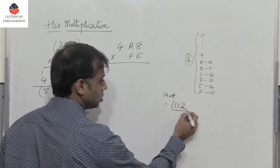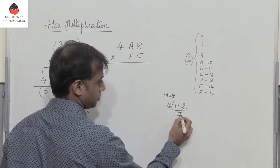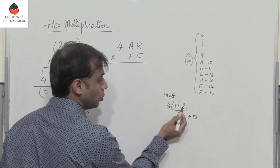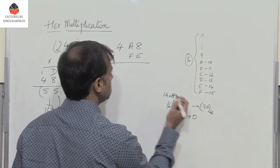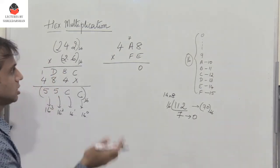So 112 you divide by 16 to get its hex representation. So you get 7 with 0 of course. So 112 in decimal is 7, 0 in hex. So I write 0 with a 7 which gets carried over.